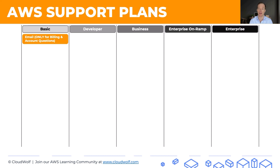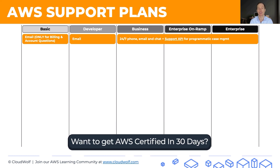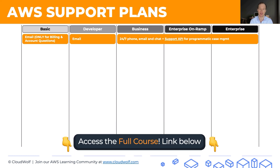With the basic plan, you only get email support, and that is only for billing and account questions — no architectural guidance. With the developer plan, you get email support. With the other three plans, you get 24/7 phone, email, and chat support. Plus, importantly for the exam, you get access to a support API for programmatic case management.